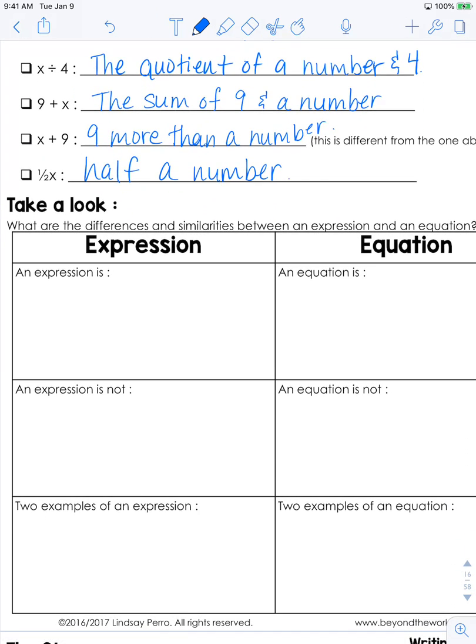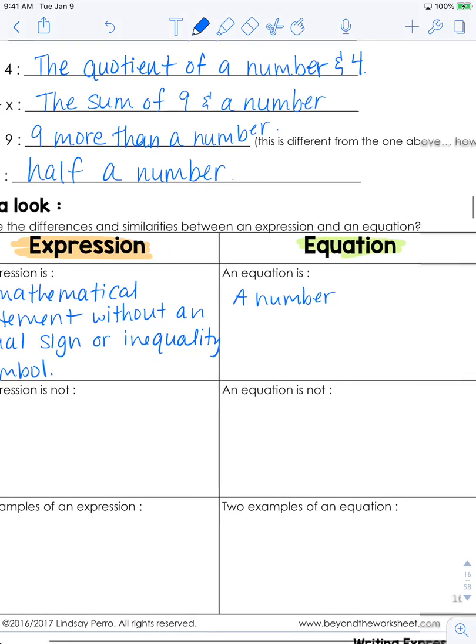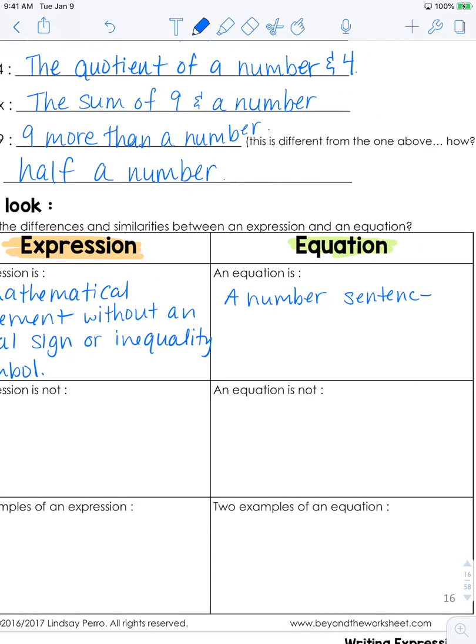Down here, these are just a couple of samples between the differences between an expression and an equation. So an expression is a mathematical statement without an equal sign or inequality symbol. Whereas an equation is a number sentence with an equal sign.